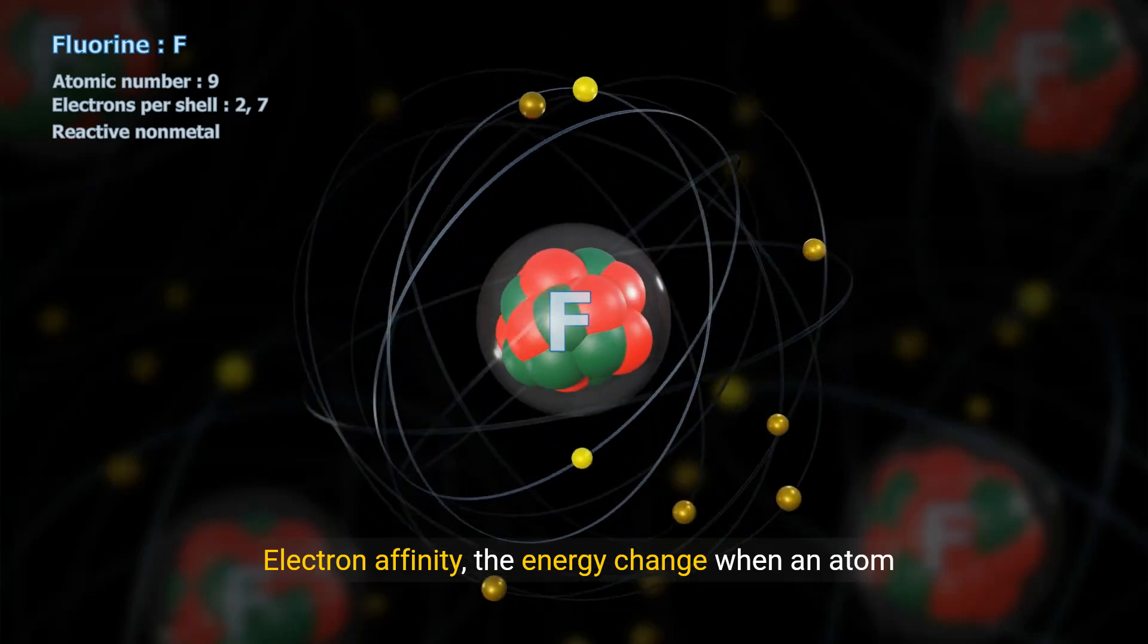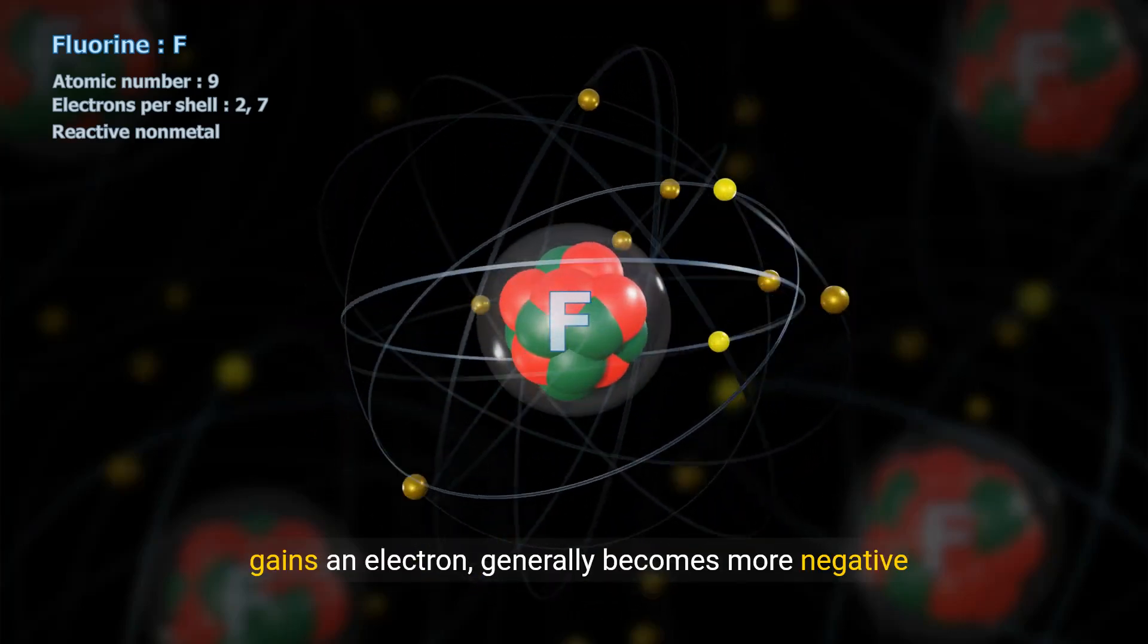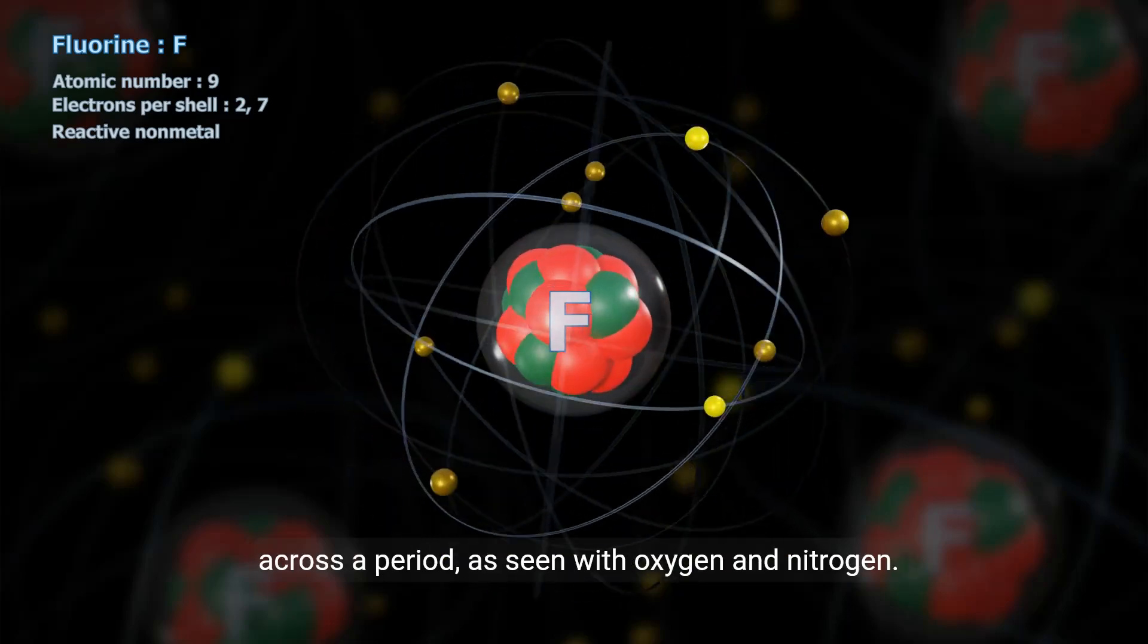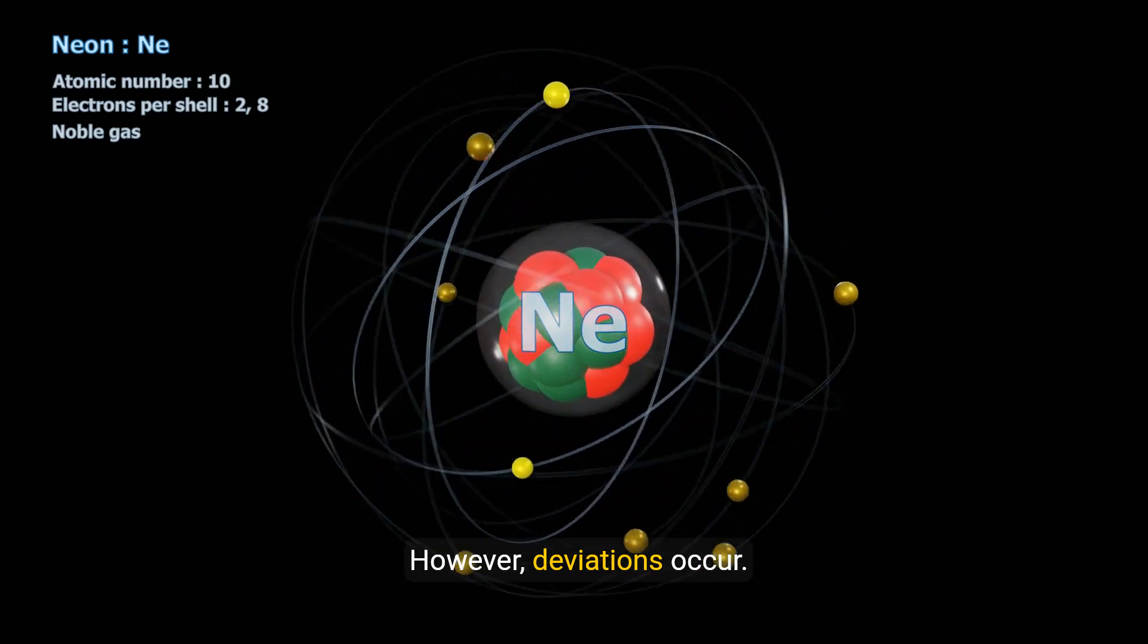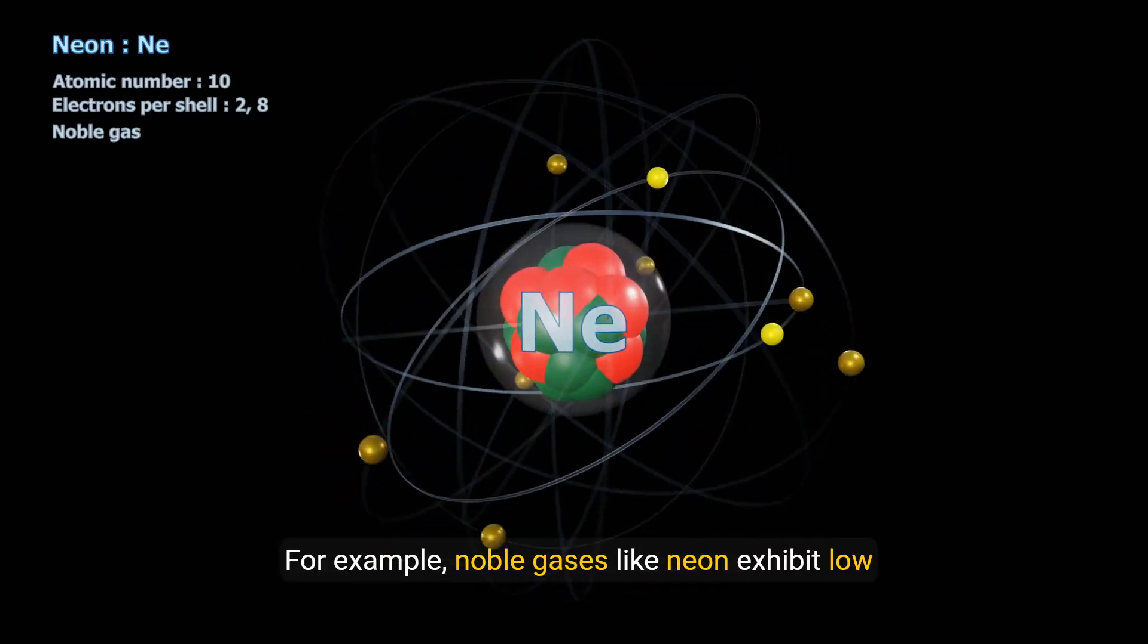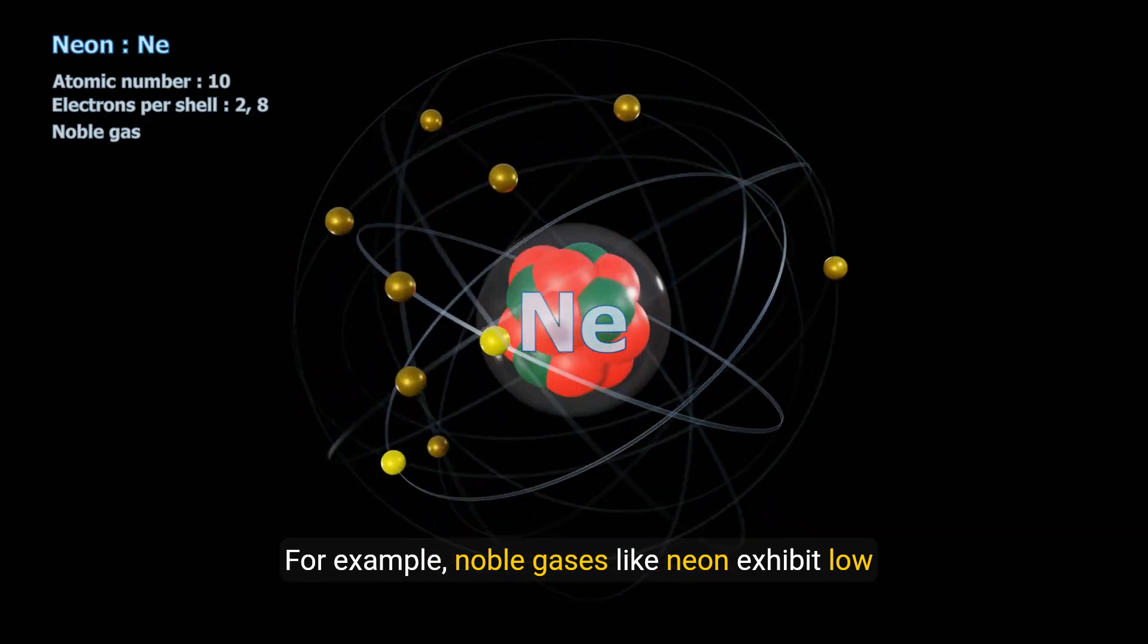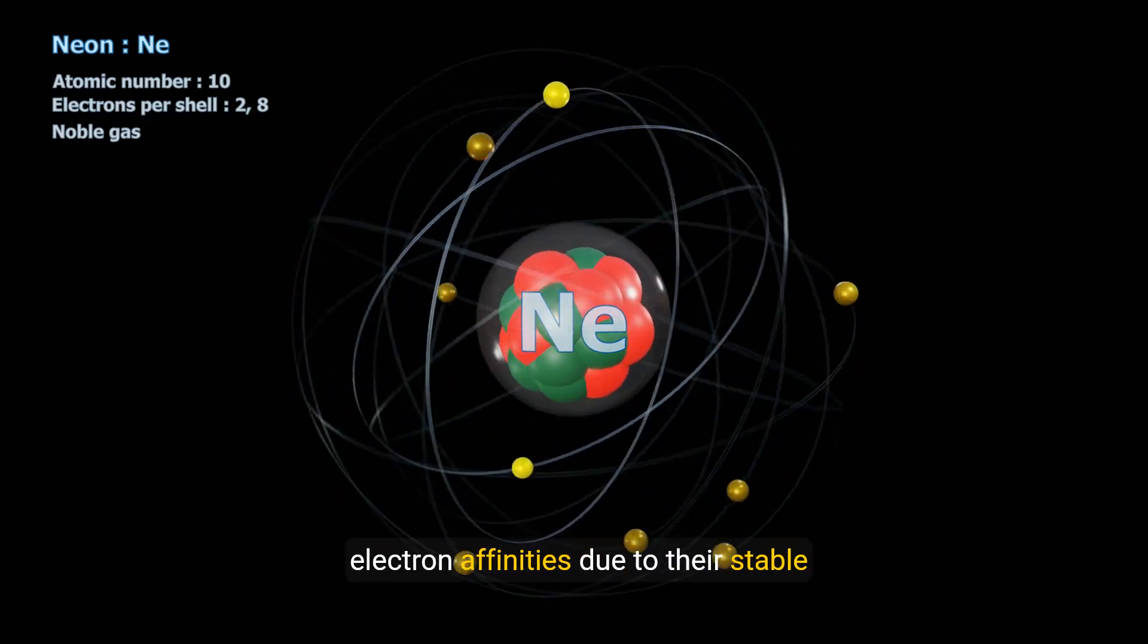Electron affinity, the energy change when an atom gains an electron, generally becomes more negative across a period as seen with oxygen and nitrogen. However, deviations occur. For example, noble gases like neon exhibit low electron affinities due to their stable configurations.